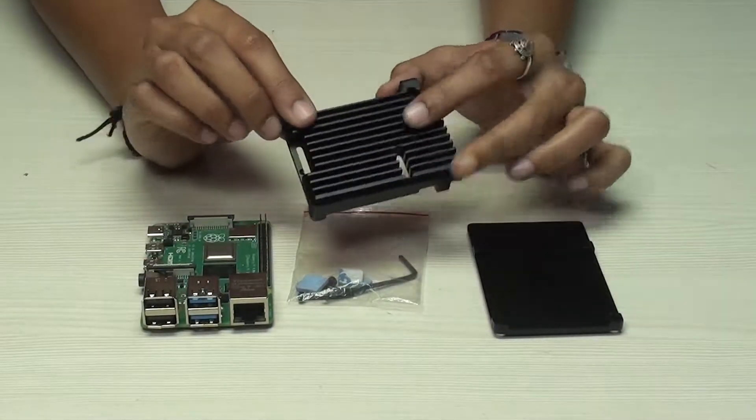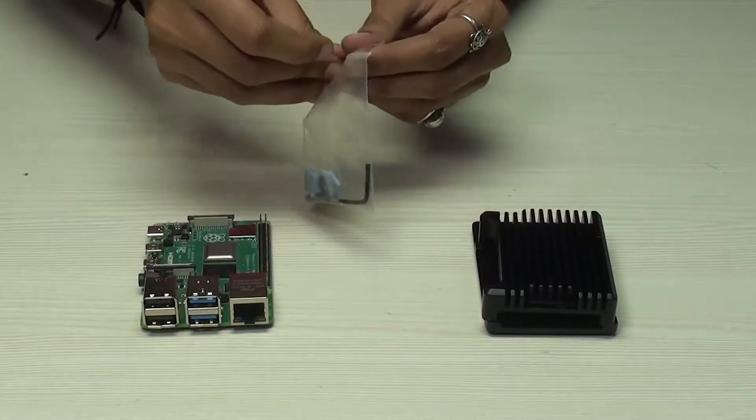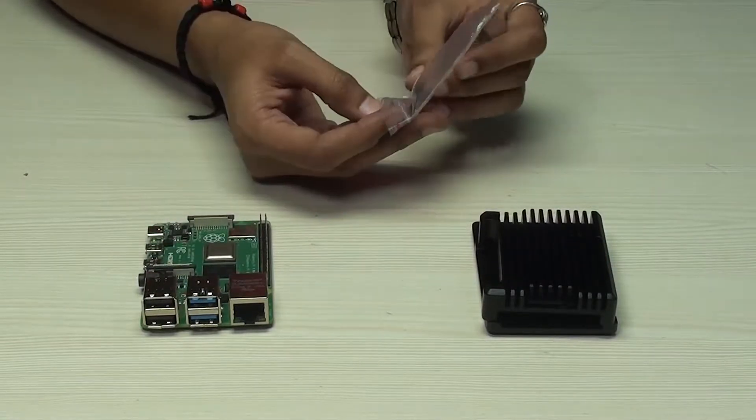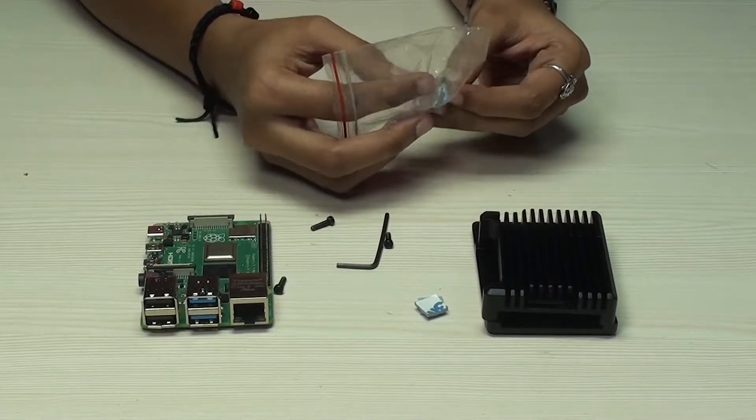First, we'll see how to install the heatsink without the fan. This heatsink comes with required bolts, allen key, and thermal tapes to install it to the Raspberry Pi 4 module.